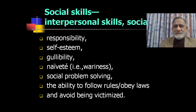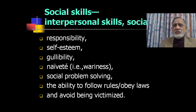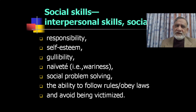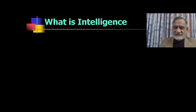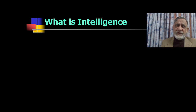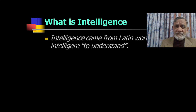So to precisely measure intellectual disabilities, we need to know two things: first, what is the level of intellectual functioning, and second, what is the level of adaptive behavior. Because the topic is long, in this video we will only discuss intellectual functioning. In intellectual functioning, the first concept is intelligence, because intellectual functioning is measured by IQ — IQ stands for Intelligence Quotient. Intelligence comes from the Latin word meaning 'to understand.'